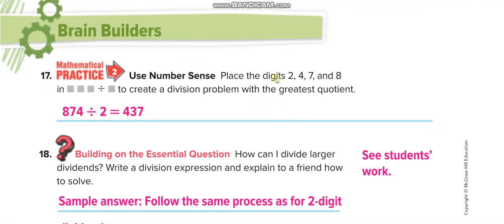Place the digits 2, 4, 7, and 8 in these empty boxes to create a division problem with the greatest quotient. If you need the greatest quotient, you must get the greatest dividend and the smallest divisor.